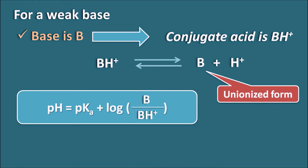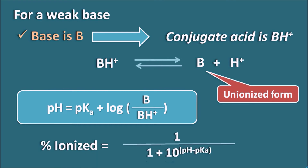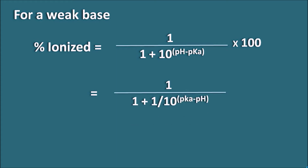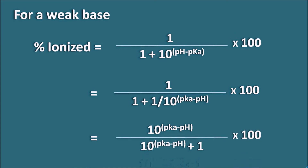We observe that the ratio is flipped for a weak base compared to a weak acid. From this, the percentage ionized for a weak base equals 1 / (1 + 10^(pH − pKa)) × 100. This equation can also be rearranged: the term 10^(pH − pKa) can be rewritten as 1 / 10^(pKa − pH), giving the equivalent form: [10^(pKa − pH) / (10^(pKa − pH) + 1)] × 100. For a weak base, either form can be used.